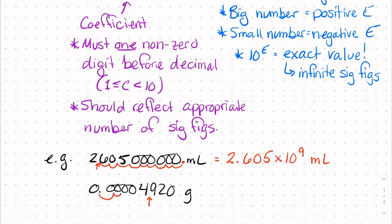To get it where we want it to go, we need to move it 1, 2, 3, 4, 5 places over. If we converted this number into scientific notation, we would have 4.920 times 10 to the negative 5th. This is a small number, less than 1, so this is going to have a negative exponent. We moved our decimal 5 places, so that exponent is going to be negative 5.